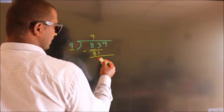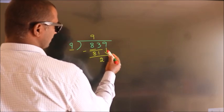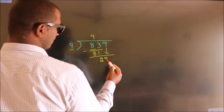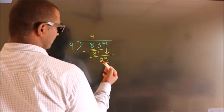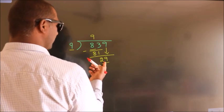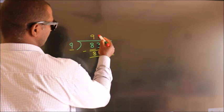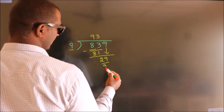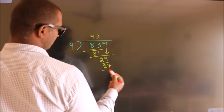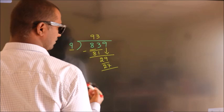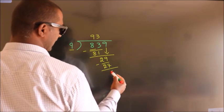After this, bring down the beside number. So 9 down, so 29. A number close to 29 in the 9 table is 9 3's, 27. Now we subtract, we get 2.